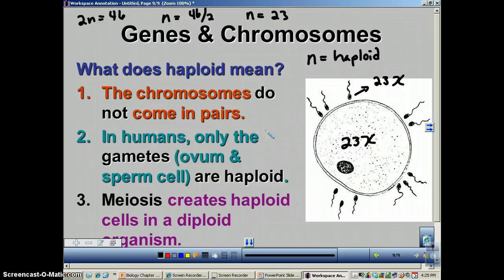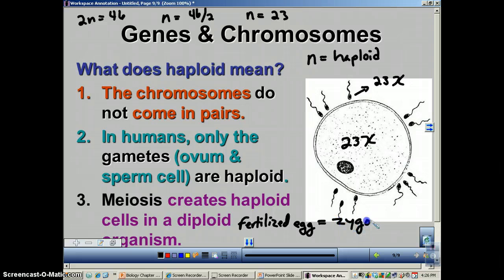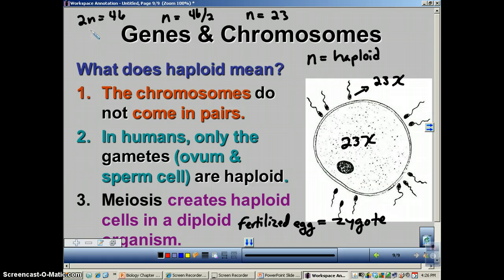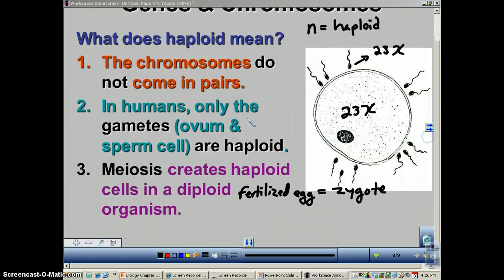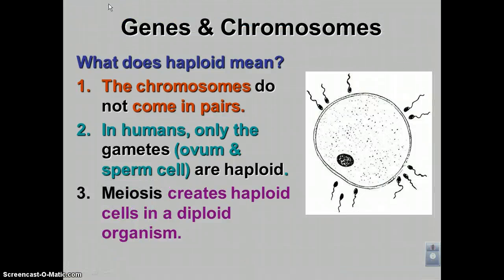When the gametes join together, we're going to have a fertilized egg, which is when the sperm and egg cell come together. The fertilized egg is often referred to as a zygote — the first diploid cell that will create the organism. How do we go from 46 chromosomes down to 23, or from diploid to haploid? We have to go through a special type of cell division called meiosis, which will be the topic of our next podcast.